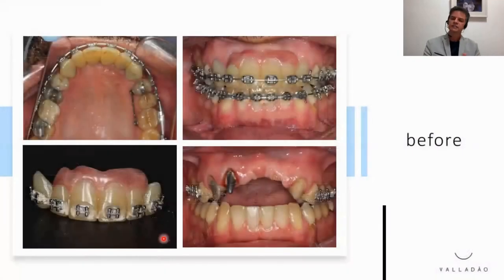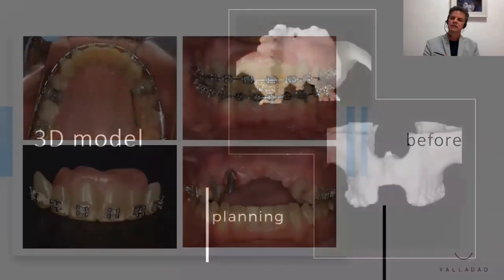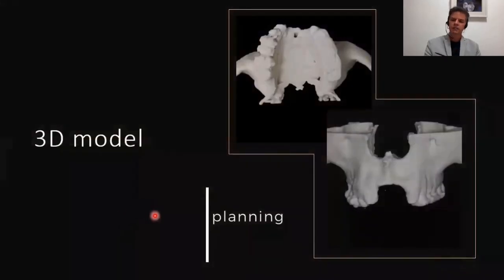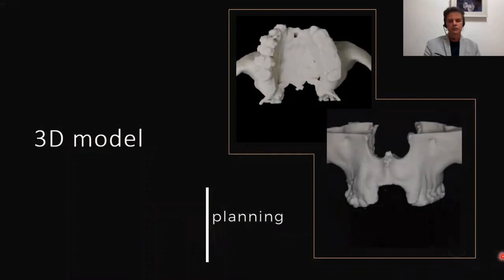This deficiency is perfectly visible in clinical images. The patient has a fixed prosthesis with artificial gingiva. Here we have the 3D printed view of the patient's bone structure. Note the considerable amount of vertical deficiency.